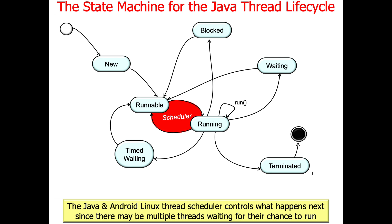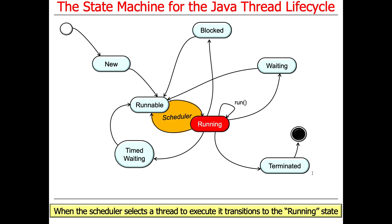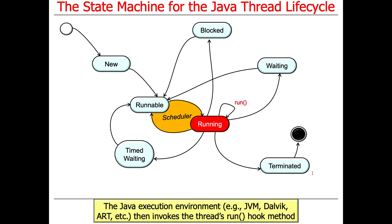Assuming we have 10 threads and four cores, at any given point there may be 10 runnable threads, but they won't actually be running because they need access to an underlying processor core. The scheduler picks a particular thread and allows it to start running. We then transition into the RUNNING state. If you ran the debugger and looked inside your thread object, you'd see a state-enumerated variable now set to running.